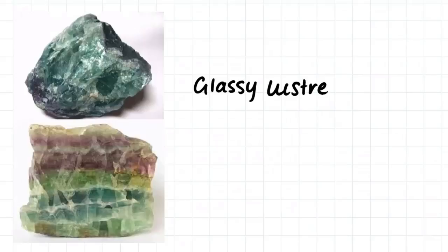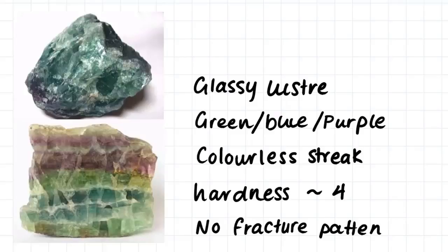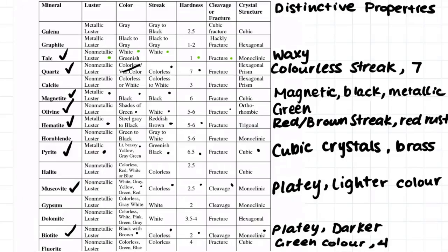This sample here has a glassy luster. It's greeny, bluey, purple in color, and this is an indicator that maybe we shouldn't use color as a property to determine what sort of mineral it is. It has a colorless streak, a hardness of 4, and no particular fracture pattern. Keeping in mind the fact that it's green and has a hardness of 4, we think that the mineral is a fluorite. Although fluorite isn't always necessarily green, so it's sometimes hard to use this as a reliable indicator. The colorless streak and the hardness of 4, together with the green color, all tell us that the mineral is in fact fluorite.